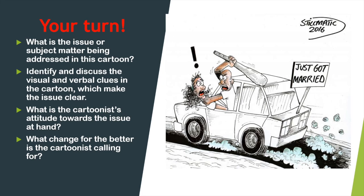The first thing you need to do is look at this cartoon carefully and figure out what's going on. There's a car with a banner that says 'just got married,' and then we see a man trying to club a wife and she looks frightened. Here are the questions: what is the issue or subject matter being addressed in this cartoon? Identify and discuss the visual and verbal clues in the cartoon which make the issue clear. What is the cartoonist's attitude towards the issue at hand — positive or negative, and why do you think so? And lastly, what change for the better is the cartoonist calling for in this cartoon? Good luck.